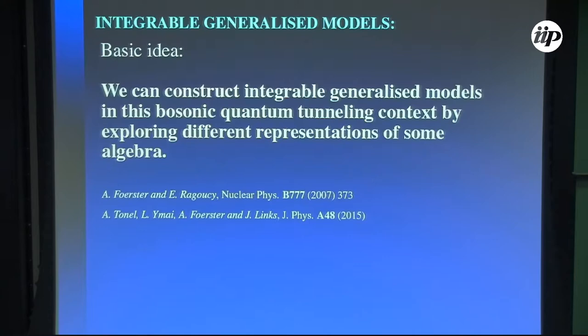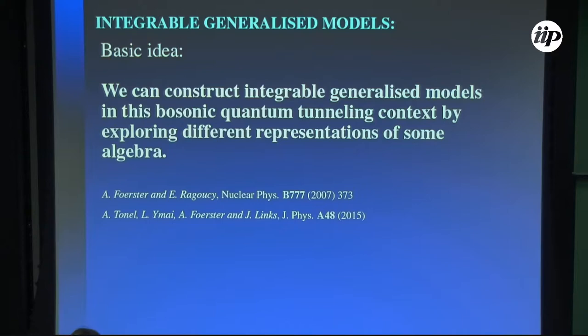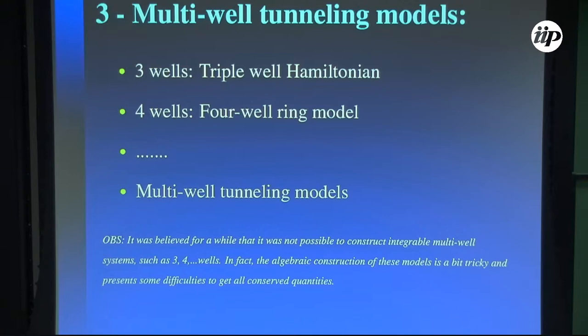We can now use this type of construction to build integrable generalized models by exploring different representations of algebras. We can use different realizations of the monodromy matrix or even other R matrices. As long as the Yang-Baxter algebra is obeyed, we will have integrable families of models which may or may not be physically relevant. Doing this, we can construct integrable multi-well tunneling models — like an integrable triple-well, an integrable four-well, or integrable multi-wells — which are extended Bose-Hubbard models.